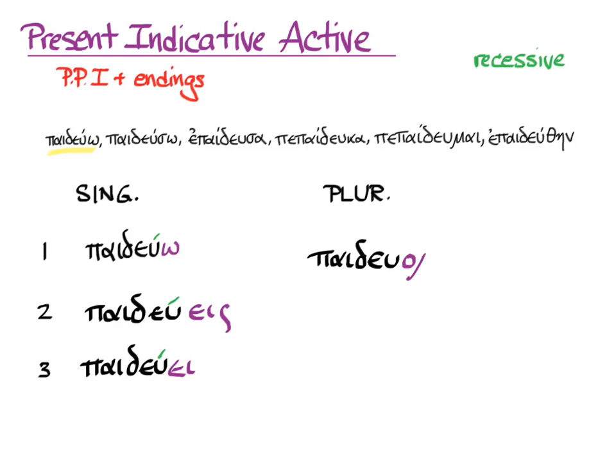First person plural, stem, ending, accent: παιδεύομεν, we educate. παιδεύετε, second person plural, y'all educate.